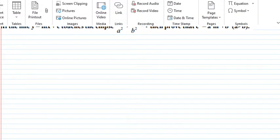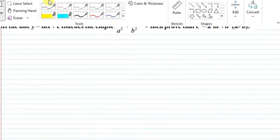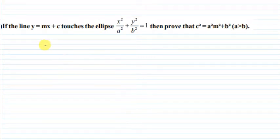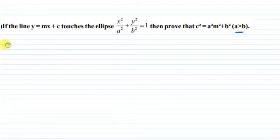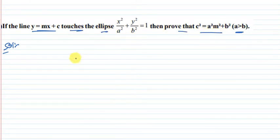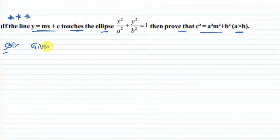We are dealing with a horizontal curve — specifically an ellipse equation where a is greater than b. This is a very important question. Write down the solution and the given ellipse.